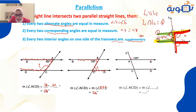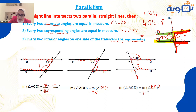Number 3: angle ACD — they form letter F, meaning they are corresponding angles. So angle ACD equals angle EAB, which equals 120 degrees.